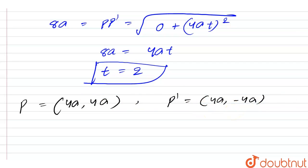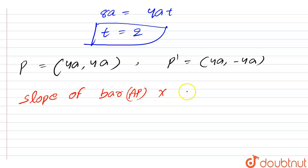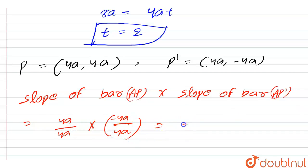Now, slope of AP into slope of AP' = (4a/4a) × (−4a/4a) = 1 × (−1) = −1.